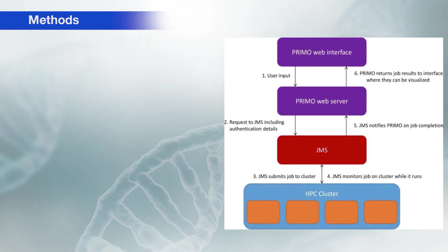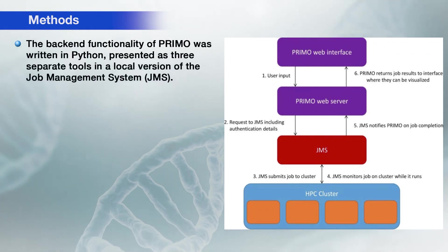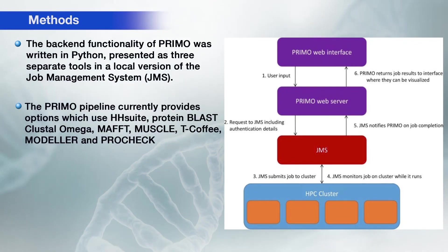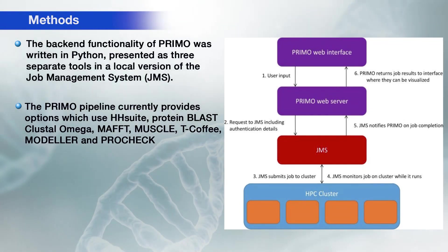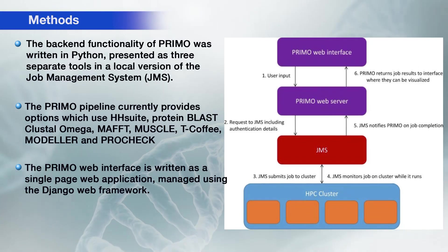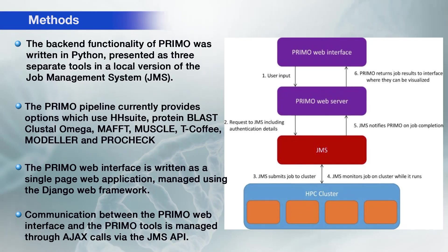PRIMO is being developed as part of H3A Bionet for use by the H3Africa consortium group, helping to analyze disease-related proteins and relevant non-synonymous SNPs. The backend of PRIMO is written in Python, presented as three separate tools in a local version of a job management system. The PRIMO pipeline currently provides options including HHsuite, Protein BLAST, Clustal Omega, MAFFT, MUSCLE, T-Coffee, Modeler, and PROCHECK, allowing users to perform BLAST searches, multiple sequence alignment, protein modeling, and protein validation. The PRIMO web interface is written as a single-page web application managed by Django web framework, with communication managed through AJAX calls via GMS API.